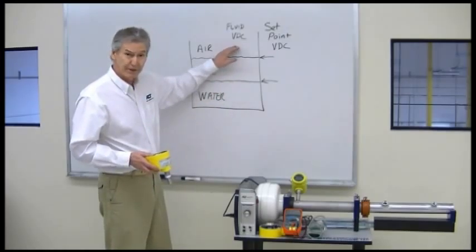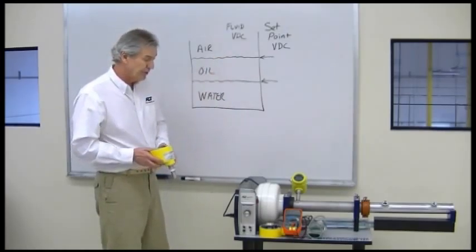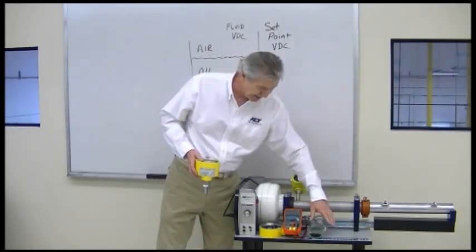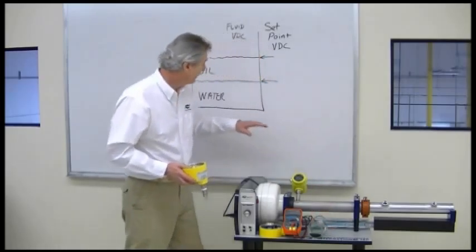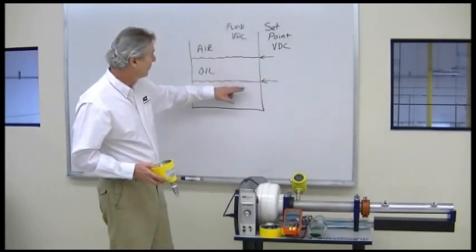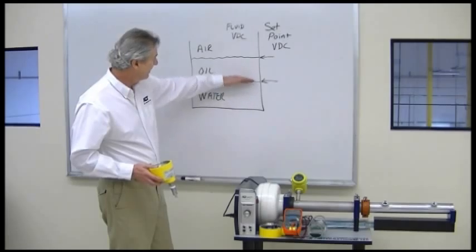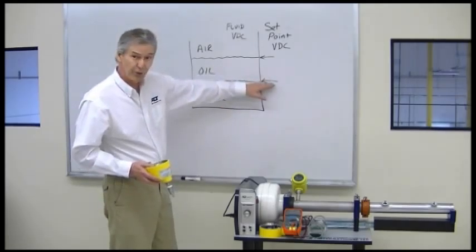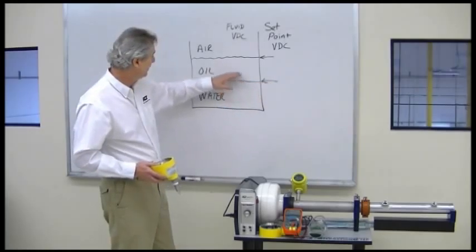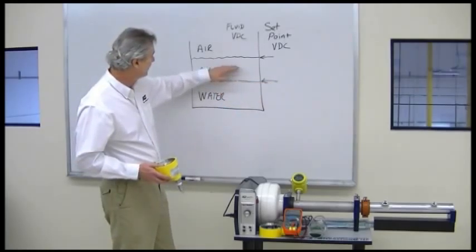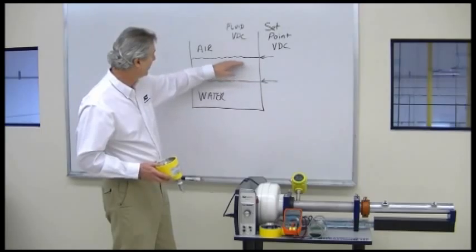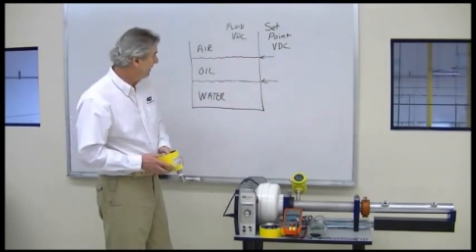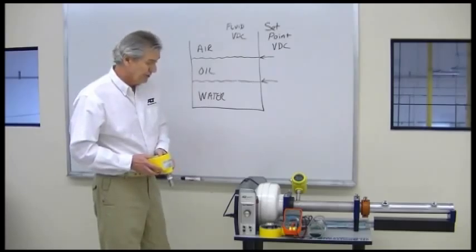So what we're going to do is we're going to demonstrate using this beaker the voltage outputs that we get in air, oil, and water. We're going to record those voltages here and then we're going to find the voltage that is in between the voltage for water and oil and make that the set point for that detection. So let's begin.